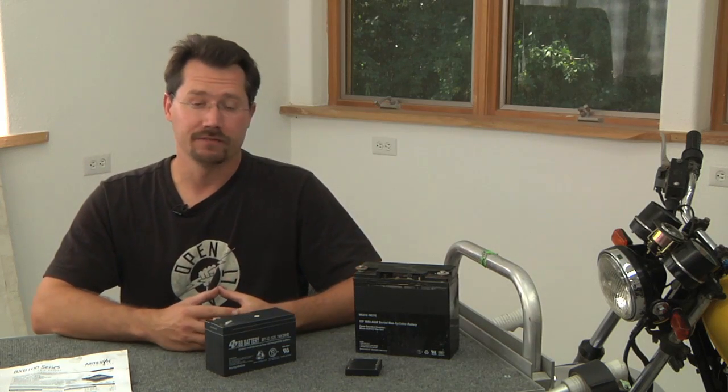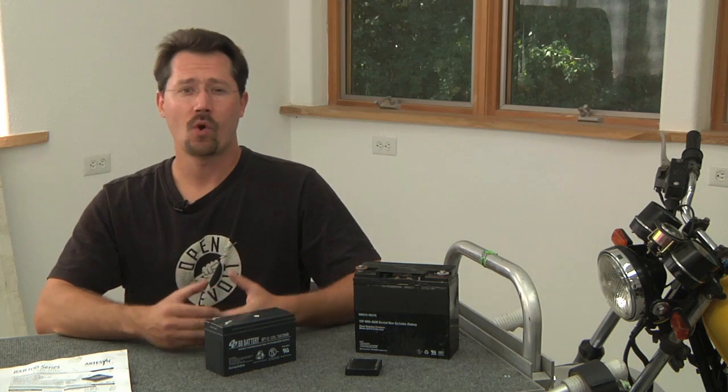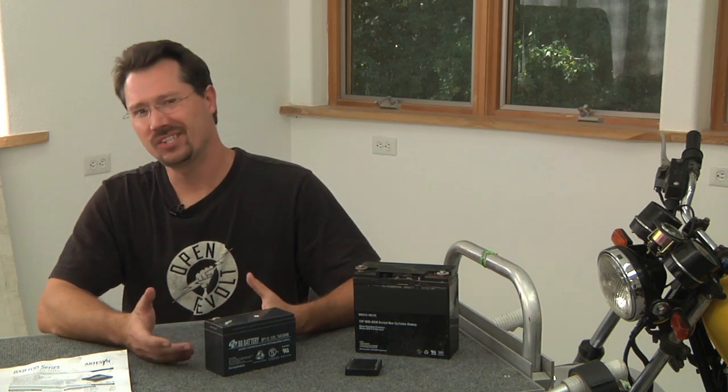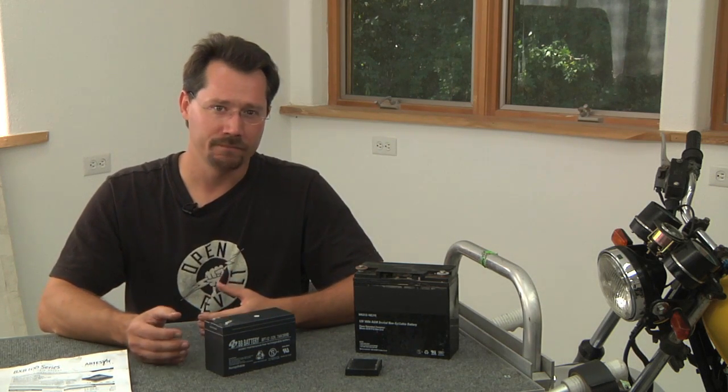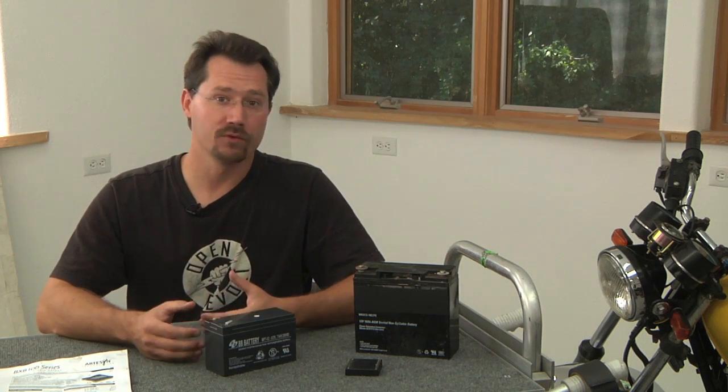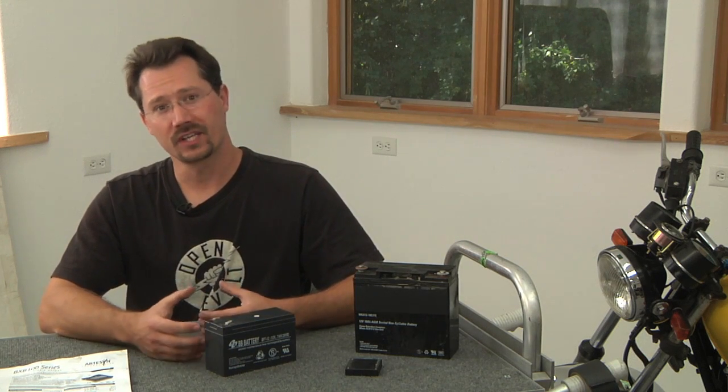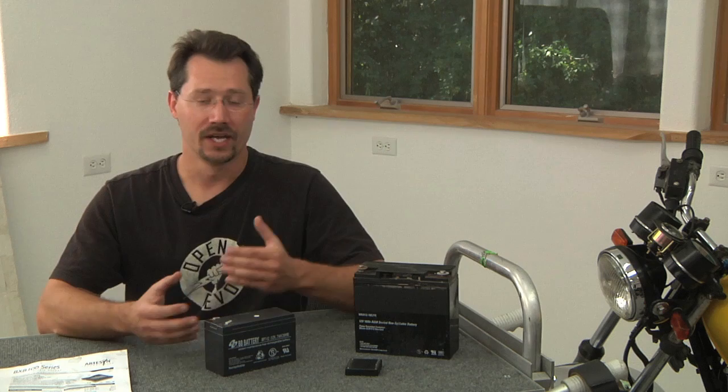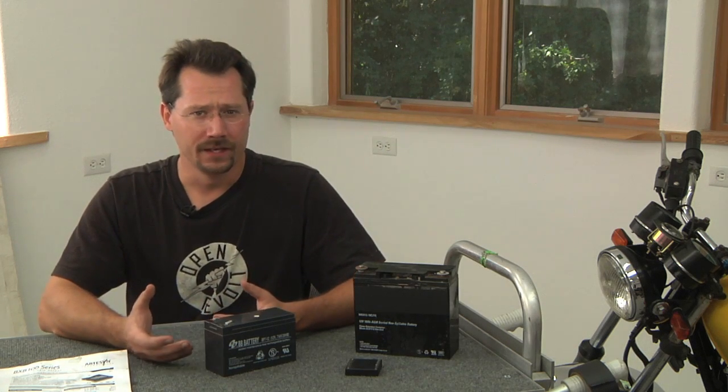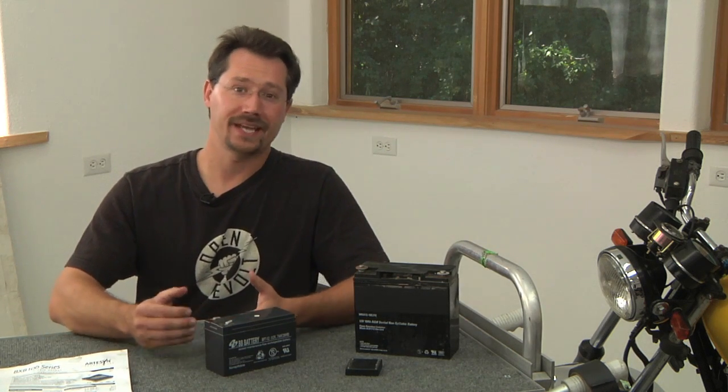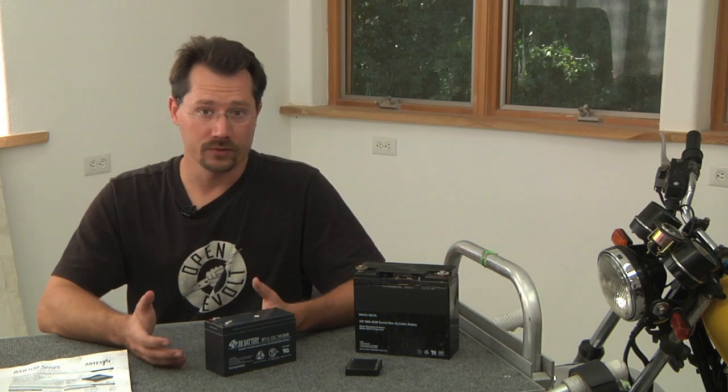In our electric motorcycle conversion process, there's something we don't want to overlook that's kind of easy to miss because we take it for granted: where does the 12-volt electricity for the motorcycle's headlight, turn signals, and other accessories come from? On a typical gasoline or diesel car or motorcycle, it's just there.